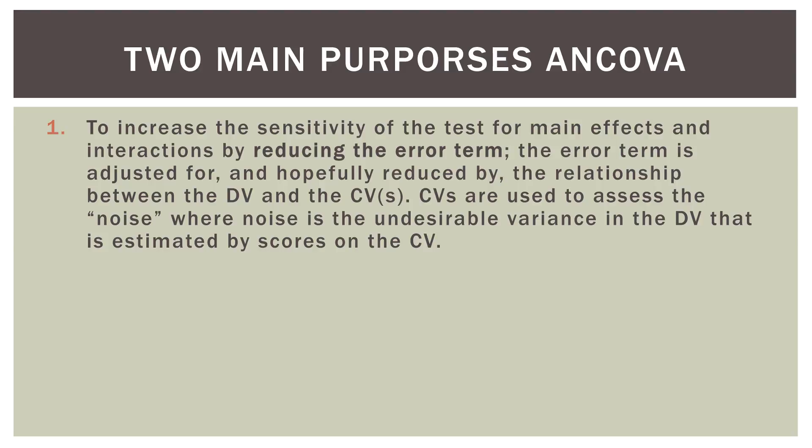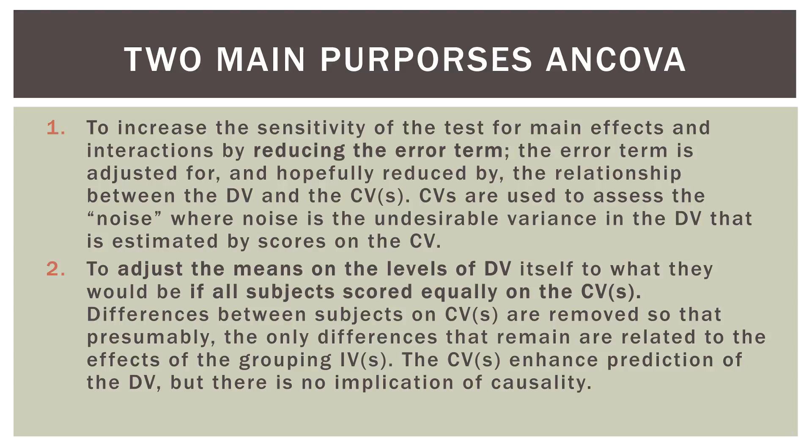ANCOVA looks for the relationship between the covariate and the dependent variable. Number two is to adjust the means on the levels of the dependent variable itself to what they would be if all subjects scored equally on the covariate. We're essentially normalizing the dependent variable by asking: what if every one of our subjects scored equally on that covariate? The differences between subjects on the covariate are removed so that the only differences that remain are related to the effects of the grouping independent variables — in this case, year one, year two, and year three. The covariates enhance the prediction of the dependent variable, but there is no implication of causality.